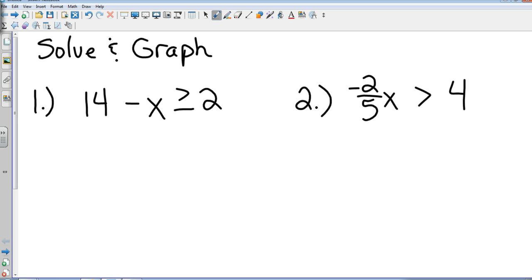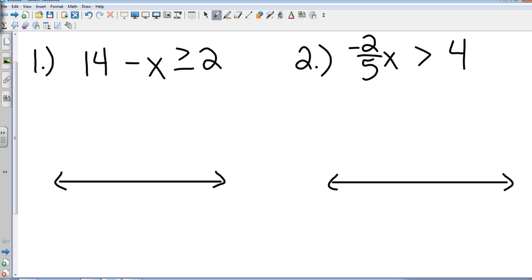Okay, number one, 14 minus x is greater than or equal to 2. And number two, negative 2 fifths x is greater than 4. Question number one, first step. Spencer, first step. Subtract 14.